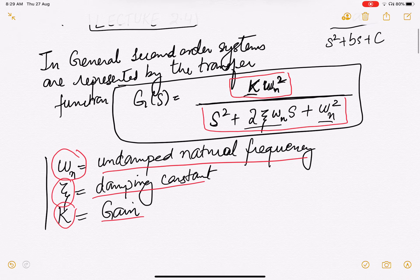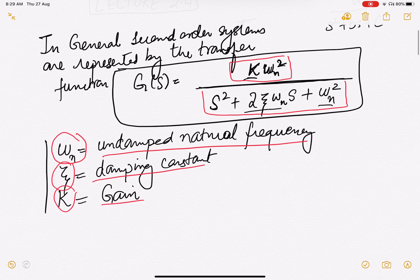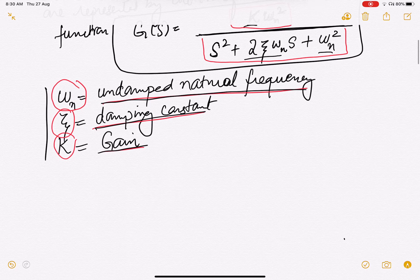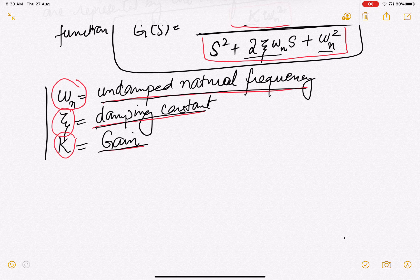The constants ωn, ζ, and k are all real quantities. ωn is called the undamped natural frequency, ζ is the damping constant, and k is the gain of the system. The value of ζ determines the form of the response.